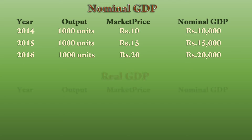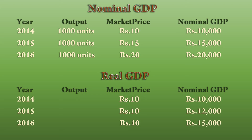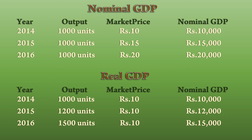Look at this table. The price of 2014 is taken as the base year price. Here also the GDP keeps on increasing, but the effect of inflation and deflation is eliminated. The cause of increase in GDP is only due to increase in output. People consume more goods in 2015 and 2016 — their welfare has gone up. Hence, Real GDP is the best measure of the welfare of the people.